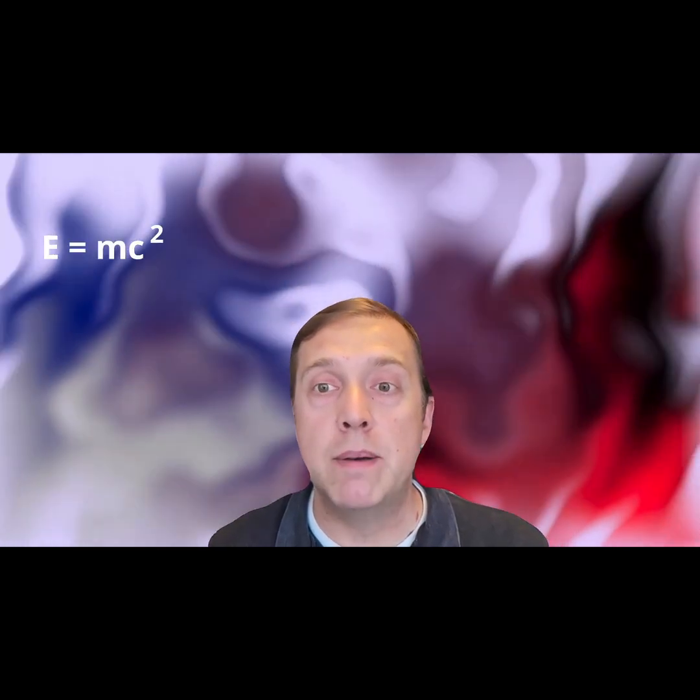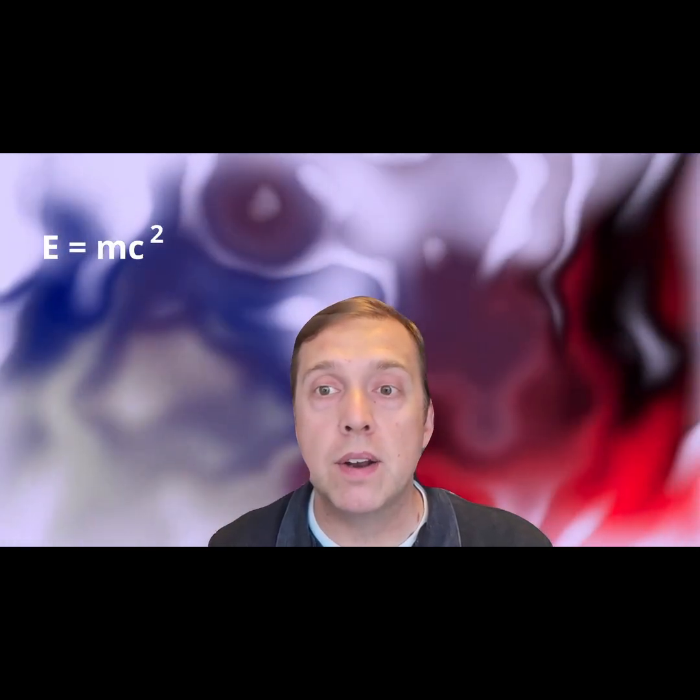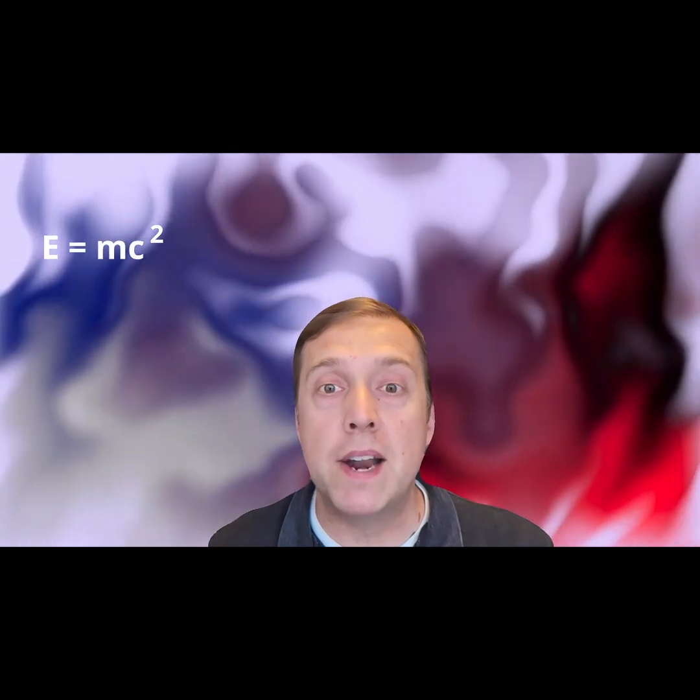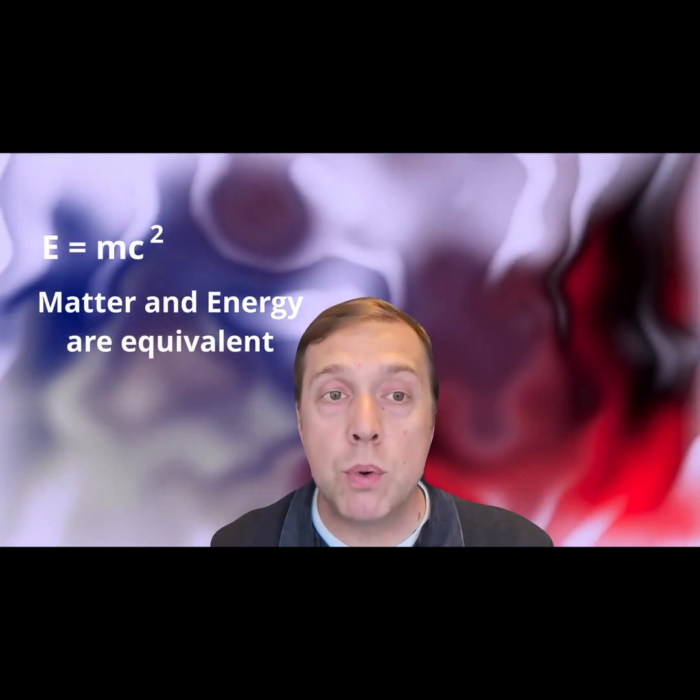It happens because energy is transformed from one type to another. This is a consequence of E equals mc squared, which basically means that matter and energy are equivalent. The energy in the muon is converted into an electron and two neutrinos.